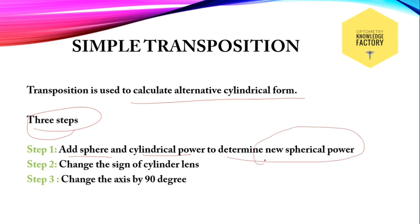Step 2: change the sign of the cylinder. If the given cylinder is in convex form, we represent a convex lens using a plus sign. To convert it into concave form, simply change the sign to minus. If the given lens form is concave, change it into convex by changing the sign to plus. Then the last step: change the axis by 90 degrees.